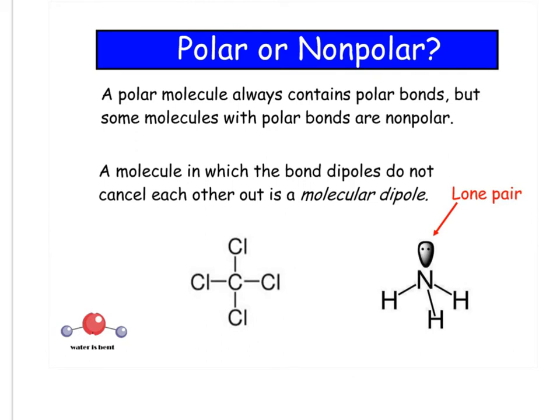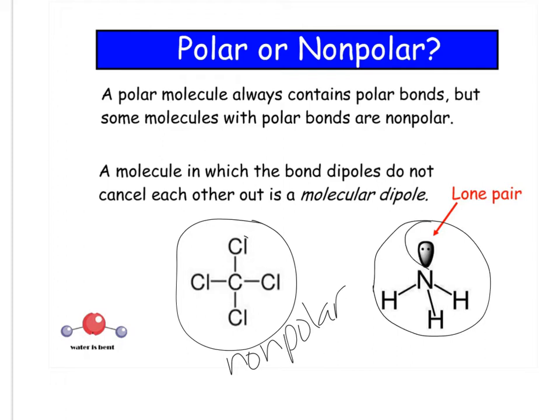So again, polar or nonpolar, look and see what's around your molecule. If everything around the molecule is exactly the same, then it's nonpolar. If everything around the molecule isn't—so you have a lone pair and three hydrogens, they're not all exactly the same—that means it's polar.